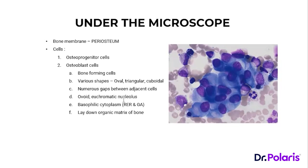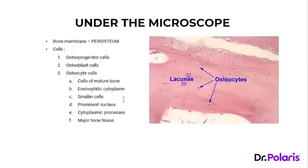The main function of osteoblasts is to lay down the organic matrix of the bone. They are responsible for synthesizing the organic component of the extracellular matrix. Apart from that, they also help in the mineralization of bone — adding minerals to the matrix. So osteoblasts are the bone-forming cells: precursor cells (osteoprogenitor) lead to osteoblasts, which lay down the organic matrix and participate in mineralization.